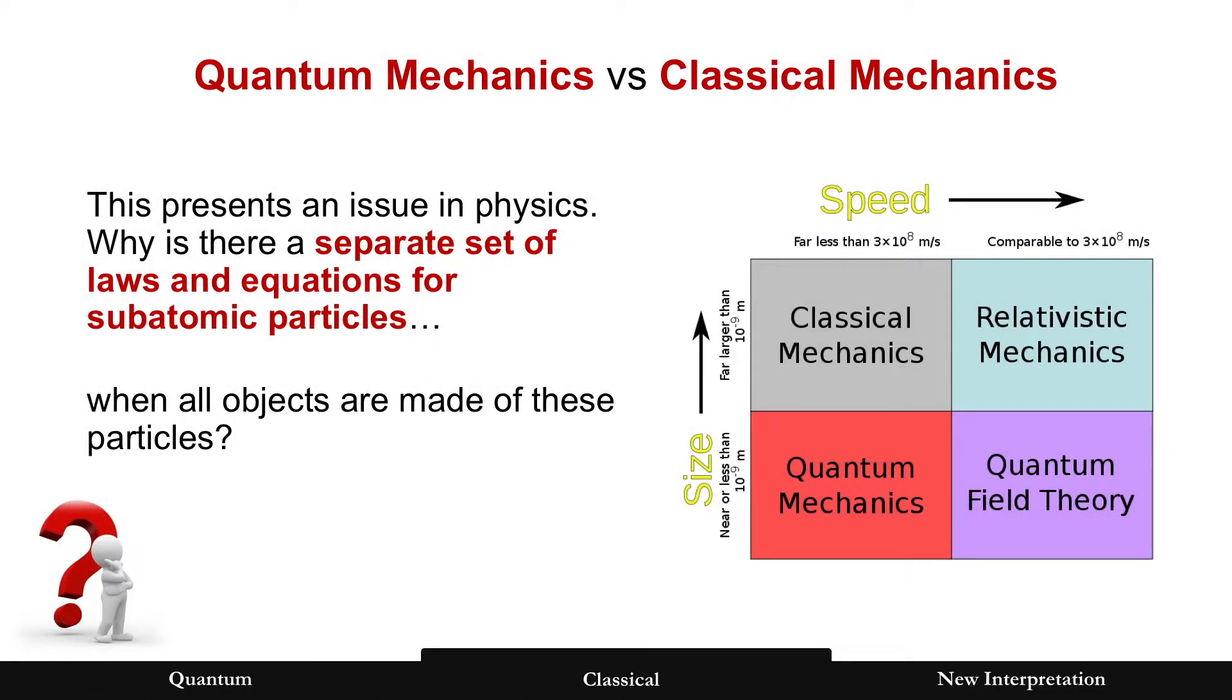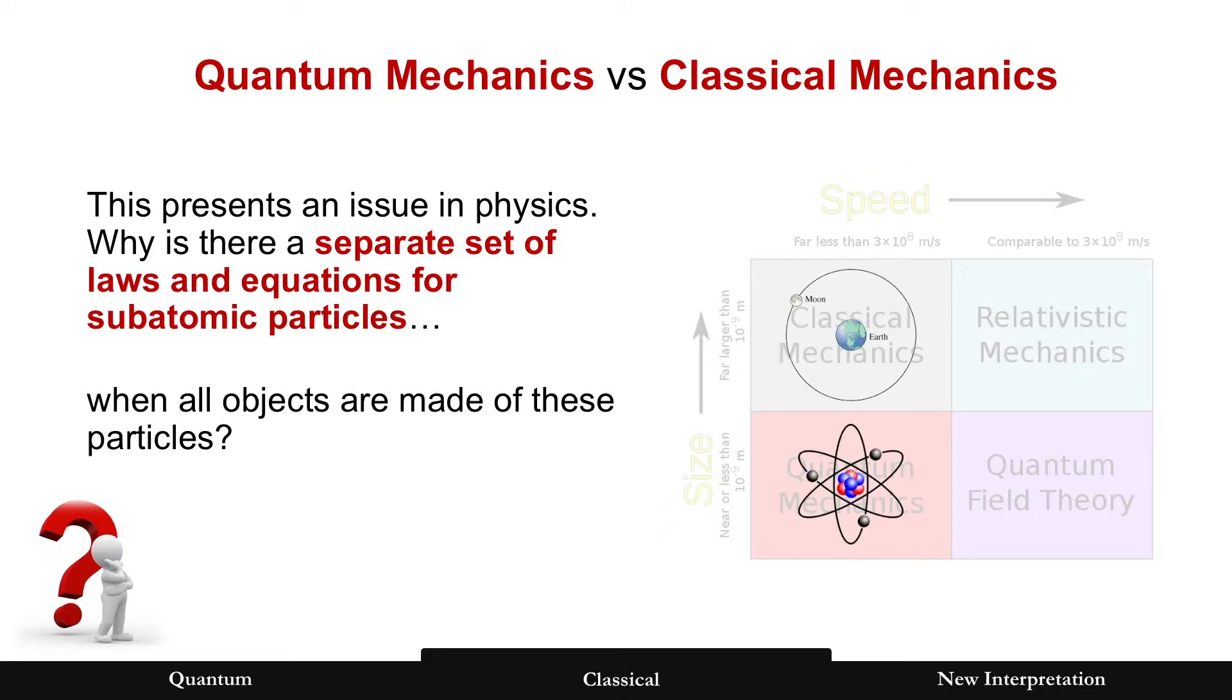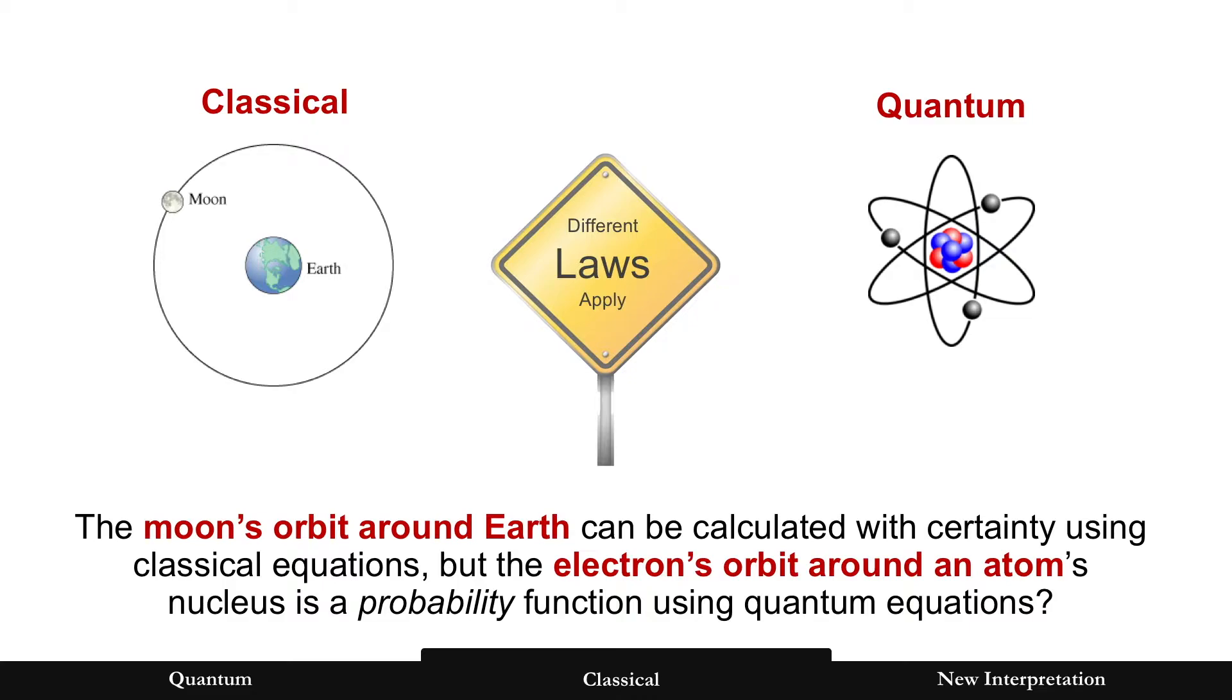And that was the beginning of quantum mechanics and the split of two different branches of physics. One for the large and one for the small particles. And different laws apply. Classical laws such as being able to calculate the orbit of the moon around the earth. It's very much known we can do that. We know precisely where the moon will be.